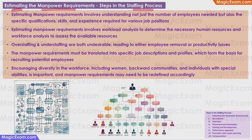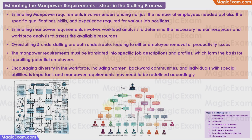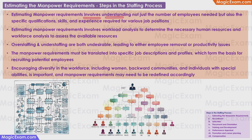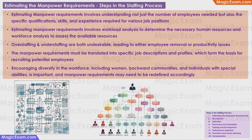Estimating the manpower requirements is the first step in the staffing process. During the planning and organizing stages, you decide the overall process, what needs to be done, how it will be done, and when. To implement the plan, you decide how many people are required, their qualifications, skills, and experience, and then create an organization structure. Estimating manpower requirements involves understanding not just the number of employees needed, but also the specific qualifications, skills, and experience required for various job positions — deciding the number, type, and level of experience needed to fill different roles.